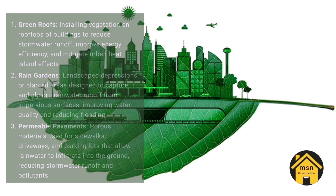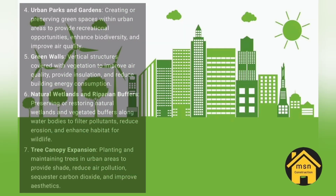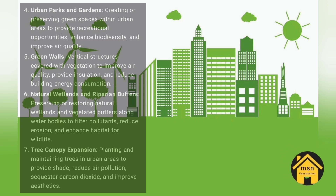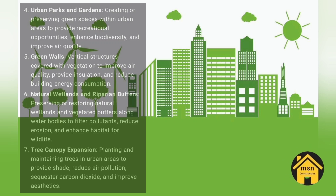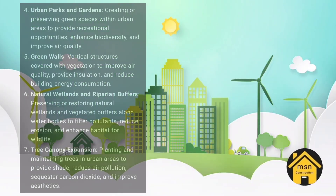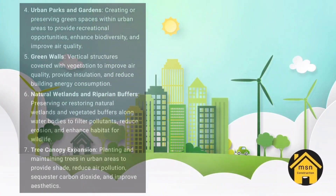Further examples include: bioretention systems — vegetated depressions or swales designed to capture and treat stormwater runoff through filtration and biological processes; constructed wetlands — engineered wetland areas that mimic natural wetland functions to treat stormwater, enhance wildlife habitat, and improve water quality; and tree canopy preservation and expansion — protection and planting of trees to provide shade, absorb carbon dioxide, mitigate urban heat island effects, and improve air quality.